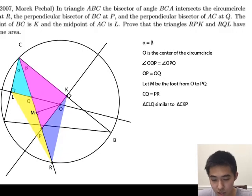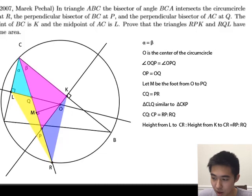First, notice that CQ to CP is equal to RP to RQ, because CQ is equal to RP and CP is equal to RQ. Next, by the similar triangles, we have that the height from L to CR to the height from K to CR is equal to CQ over CP, and that is equal to RP over RQ.